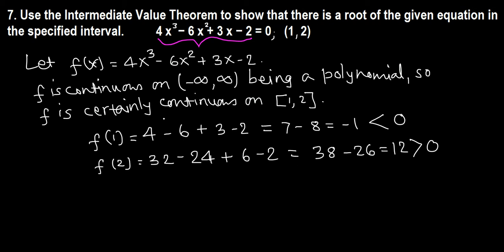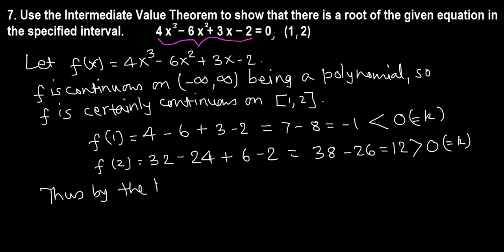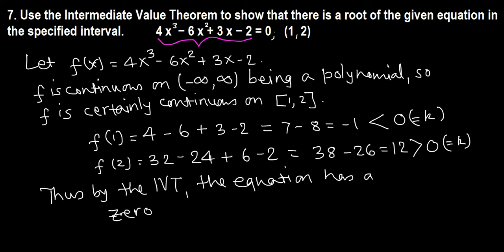The value 0 is the k-value here — it lies between f(1) = -1 and f(2) = 12. This function satisfies all conditions of the intermediate value theorem. Thus, by the intermediate value theorem, the equation f(x) = 0 has a root — that is, the function takes the value 0 — on the interval [1, 2].